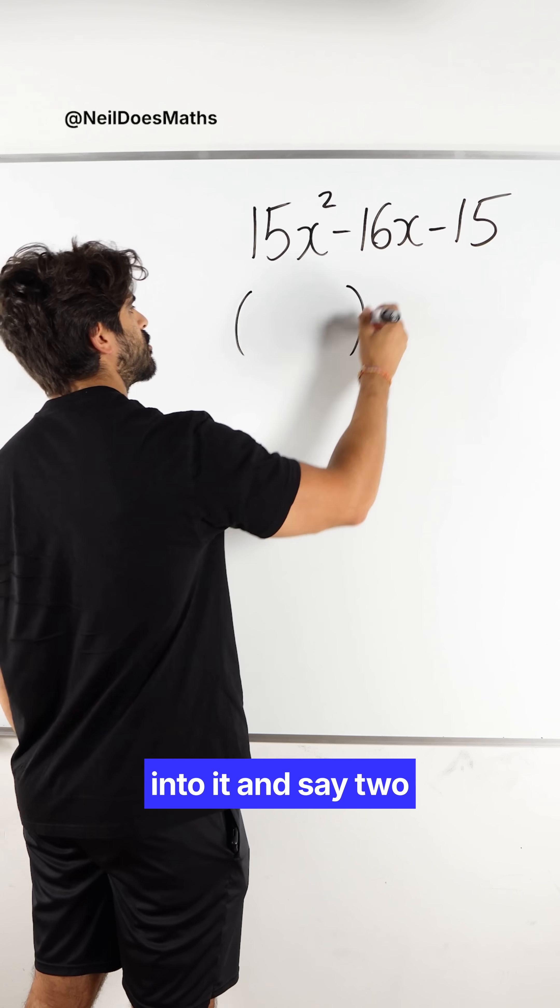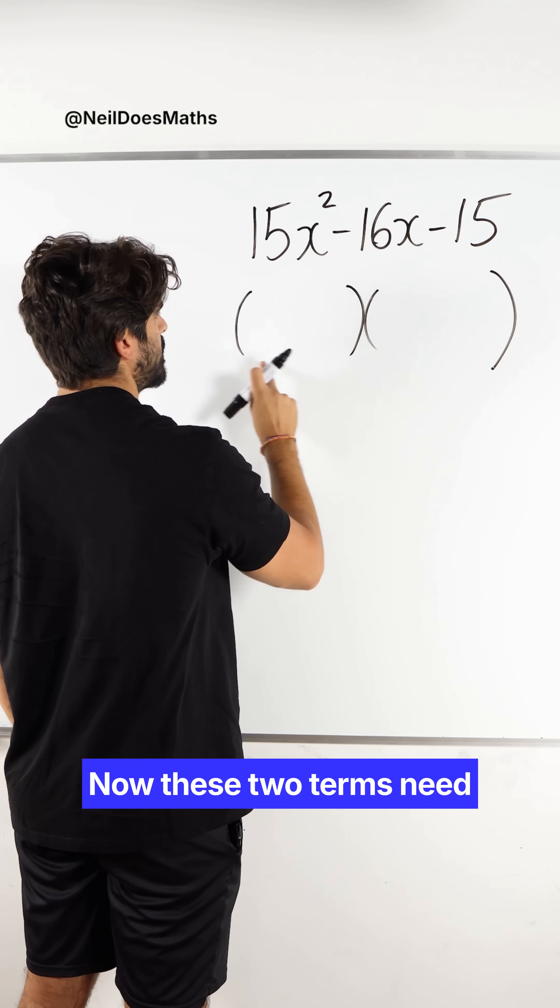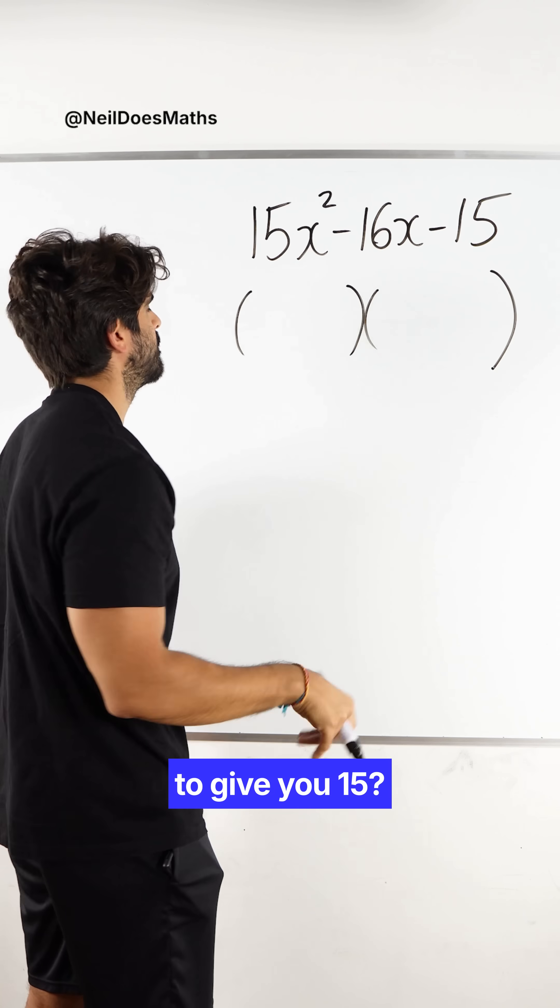We can go straight into it and say two brackets multiplying to give you this. Now these two terms need to multiply to give you 15x squared. So we just need to think, okay, what multiplies to give you 15?